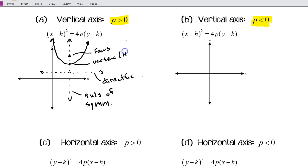This is (h, k), and then this little distance here is p. This distance here is also p. So that's if p is greater than 0. If p is less than 0, we're going to have a similar thing. It's just going to open down. Just picking any point for my vertex—p is less than 0, it's going to open down.